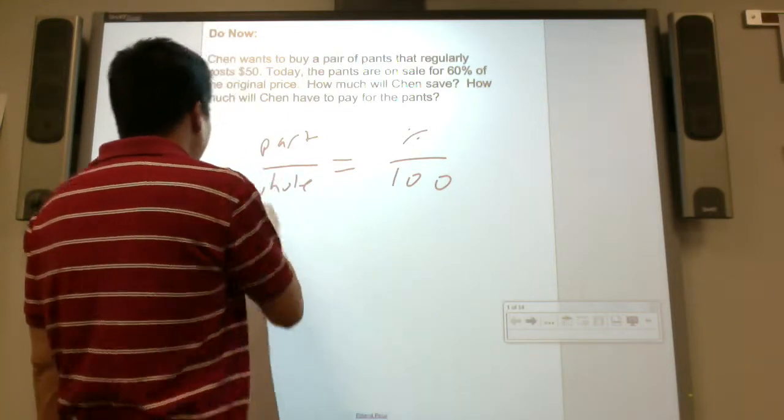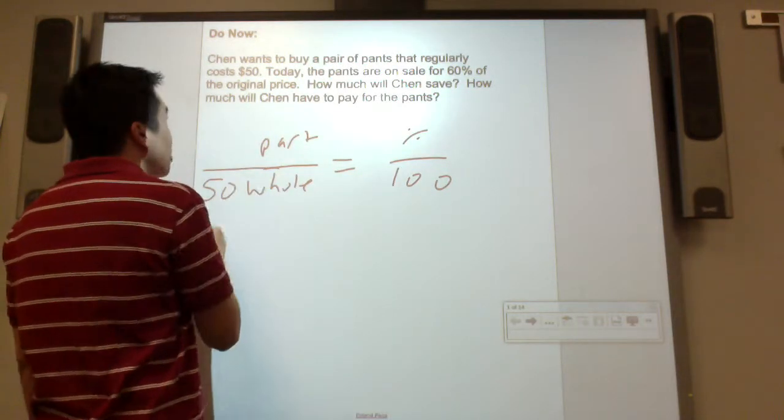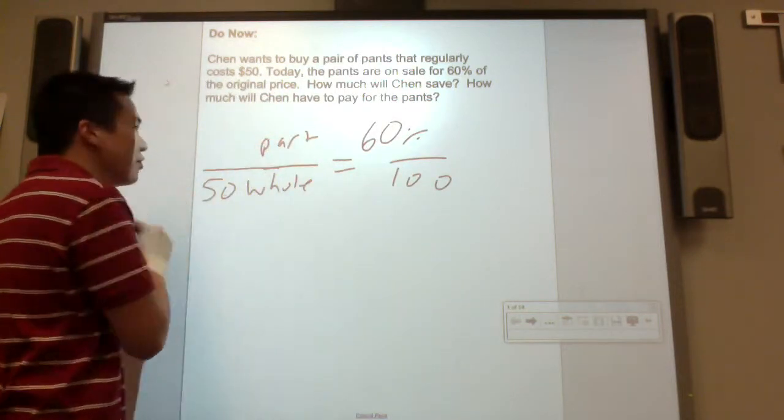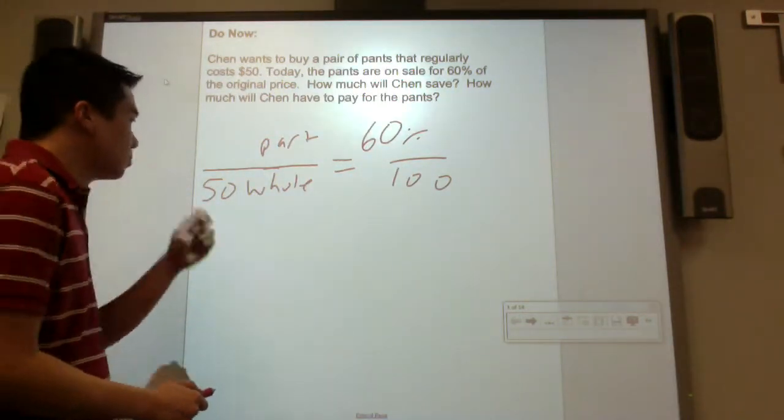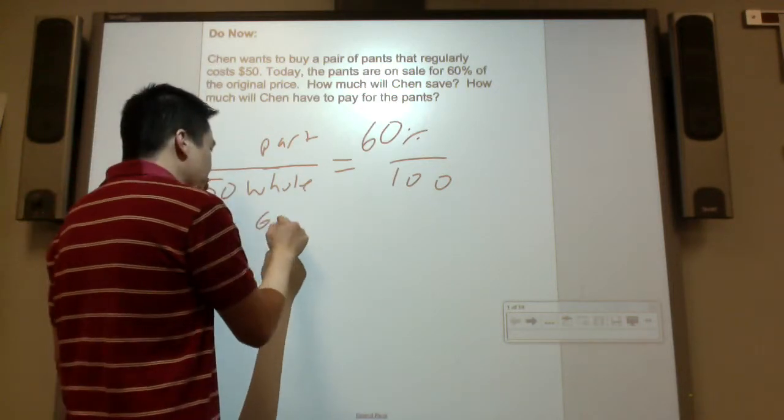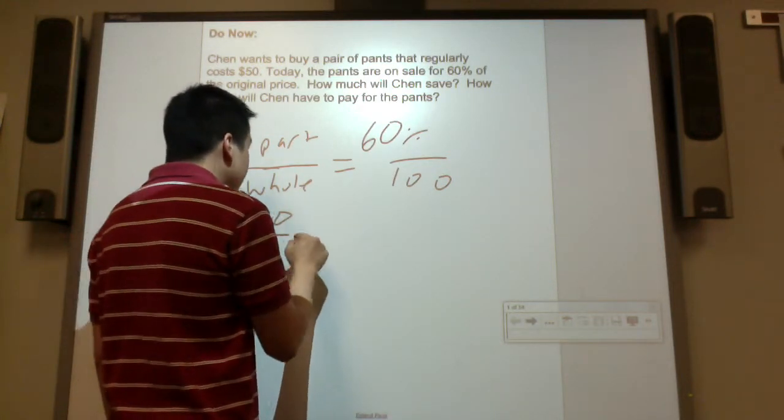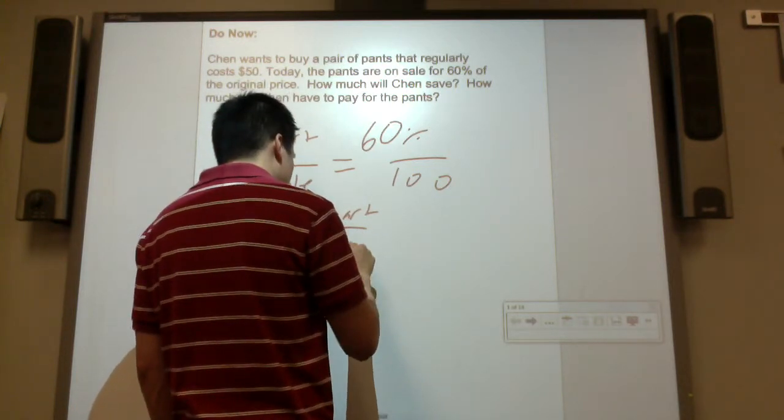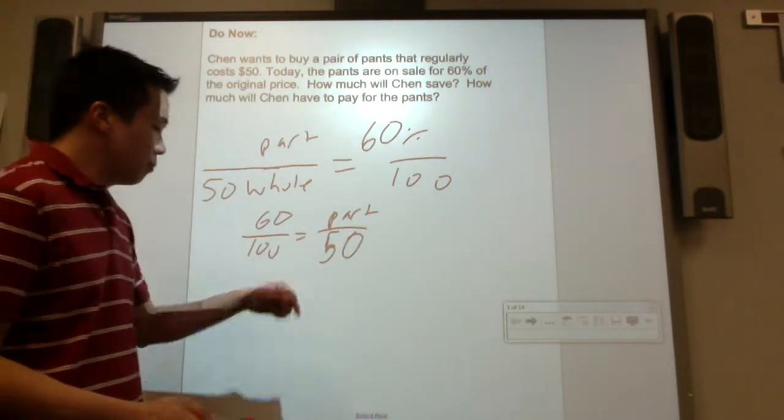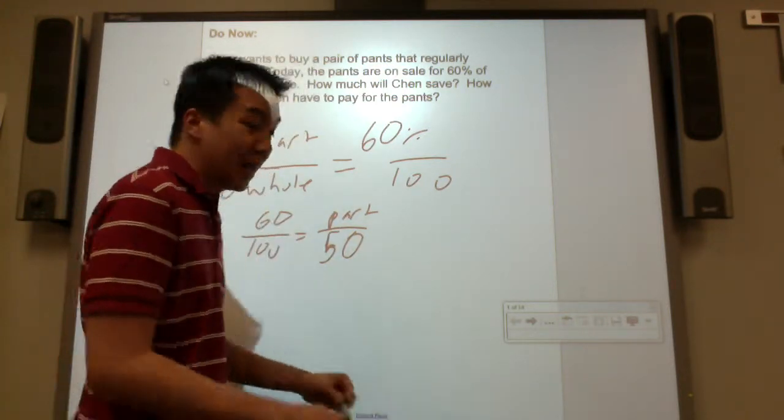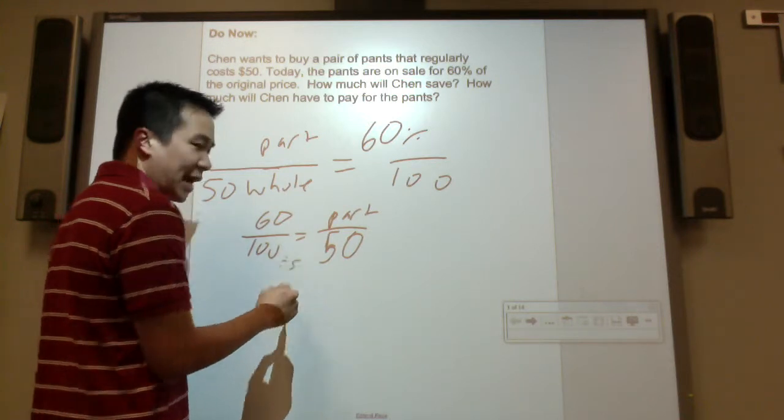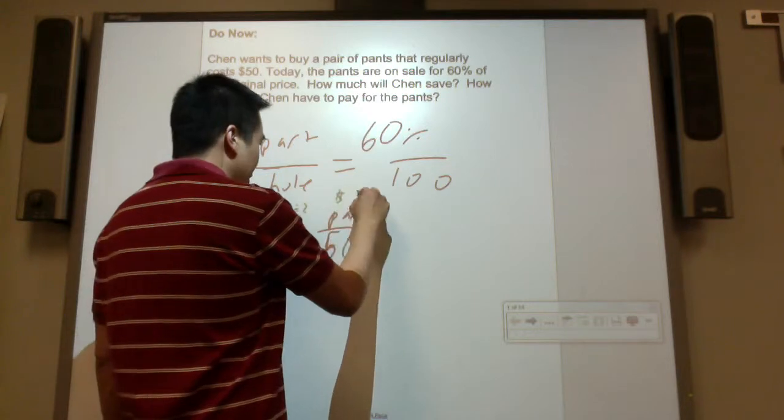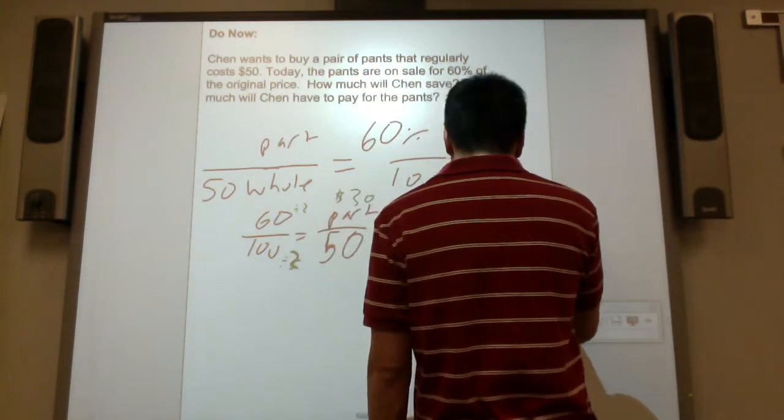The pants regularly cost $50, that is the whole price. It's on sale for 60%. What is 60% of $50? I'm going to reverse this and switch it around. Can 100 be broken down to 50? It can be, I scaled down by dividing by 2 and I get $30. So $30 is the saving.